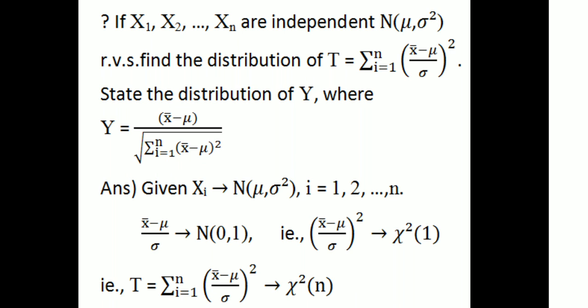Each xᵢ follows a normal distribution with mean μ and variance σ². So (xᵢ − μ)/σ follows N(0,1), and therefore (xᵢ − μ)²/σ² follows a chi-square distribution with 1 degree of freedom. Each squared standardized term gives chi-square with 1 degree of freedom.